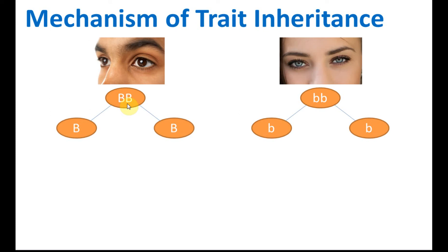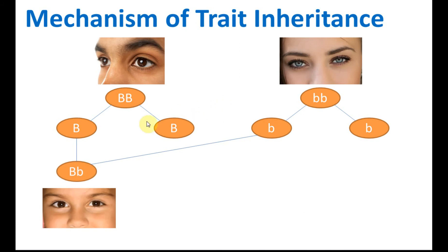If you still remember, during meiosis the chromosomes will duplicate and separate into two. So the chromosomes are separated into two, and then reproduction occurs. Let's say this gene combined with this one — so this is what we get: we get a hybrid gene here. And since the brown eye is dominant, the child has brown eyes.